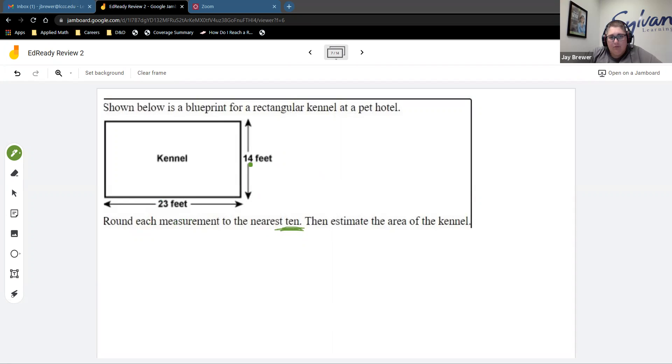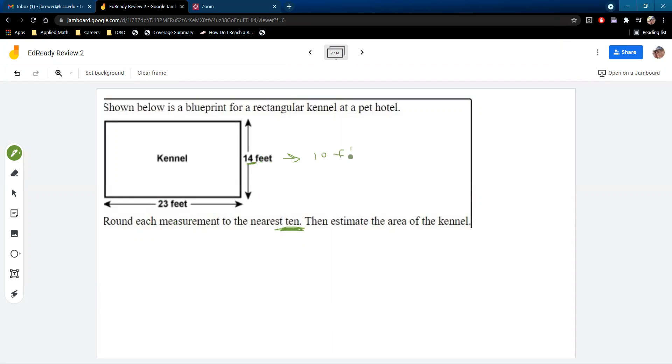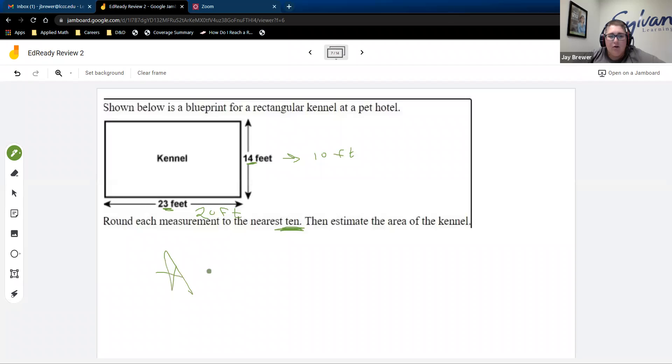Again, this is another estimation, nearest 10. And it's an application based problem for the rounding. So we want to go to the nearest 10. So for this measurement here, we're going to look at the 4 in the ones place, which will give us a rounded answer of 10 feet here. And then for the bottom, we're going to look at the 3 in the ones place, which will give us 20, 20. And to find the area, which I do recommend that you all memorize your formulas because you do not get a formula sheet on the placement test. So I would recommend that you try to memorize as many of these as possible. We're going to do length times width here, which means we will take 20 times 10. And that will give us an area of 200 feet squared.